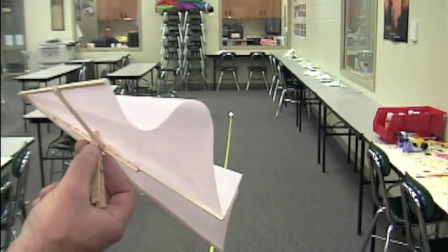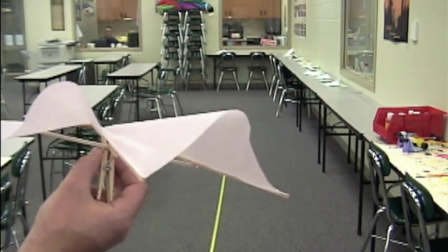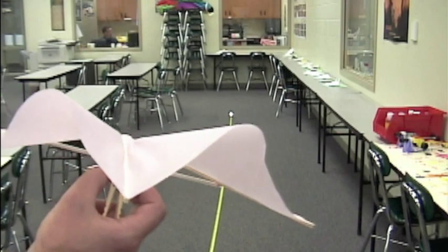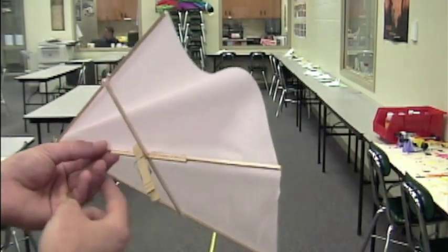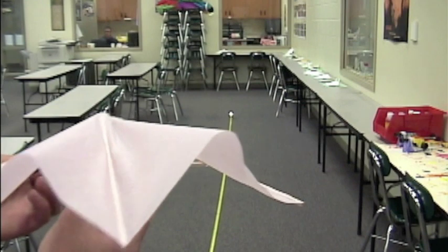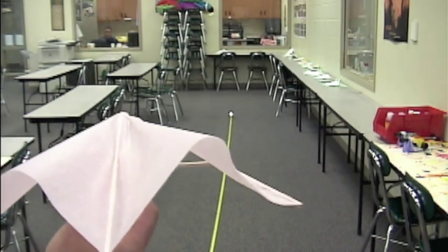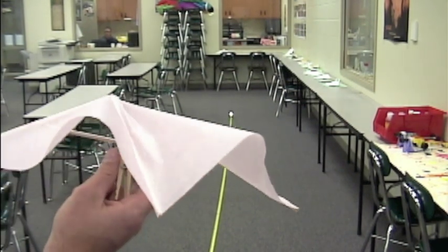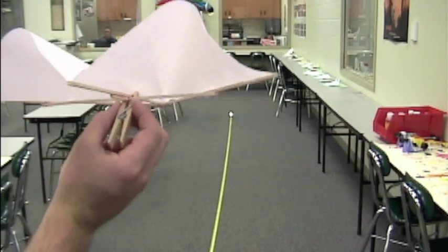Before you take your ten throws that you measure down, you want to take a few practice throws and work with your hang glider and find your center to help it fly correctly and see if you need any trimming to see if it needs to fly a little bit more straight.